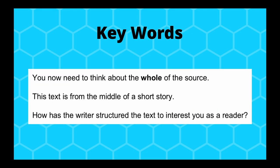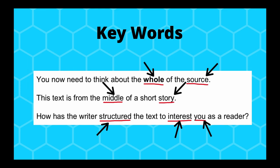Let's look at a slightly longer and more abstract question: 'You need to think about the whole of the source. This text is from the middle of the short story. How does the writer structure the text to interest you as a reader?' The first keyword is 'whole of the source' — you're not looking at a specific paragraph or stanza, you have to look at it from start to finish. The source is vague, so it's a keyword. It's from the 'middle' of a 'short story,' which tells you important information — it's not a poem.